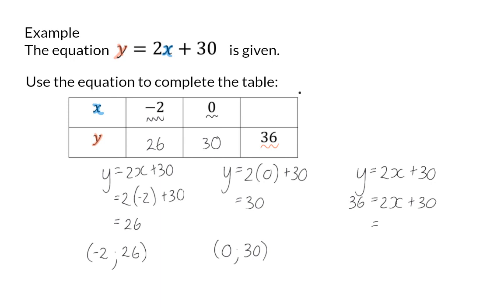Firstly, to get 2x alone on the right-hand side, I'm going to subtract the 30 on the left. This will leave me with 2x equals 6, and to get rid of the times by 2, I will divide both sides by 2, ending with the x value being equal to 3.